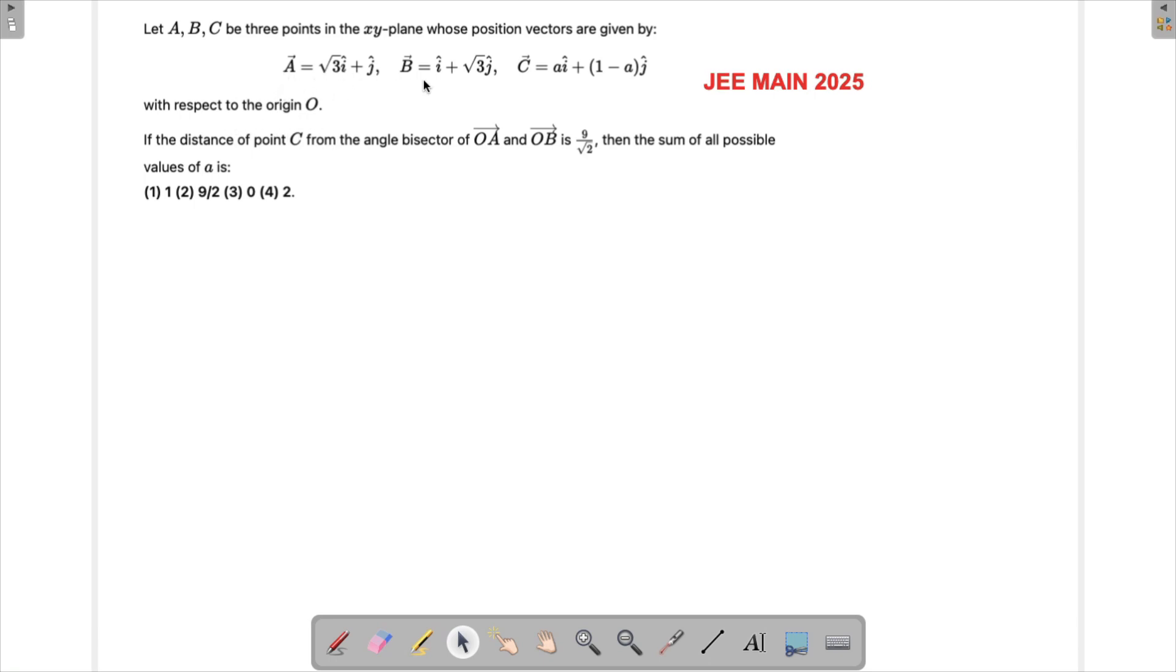And then what we have to find out is the angle bisector of OA and OB and the distance of point C from this angle bisector line, and then sum of all possible values of alpha at the end. So alpha is actually part of this. Many times what you would find when the question is given in xy-plane, if you convert it into a coordinate geometry problem this is easily solved. So that is what we'll try to do over here.